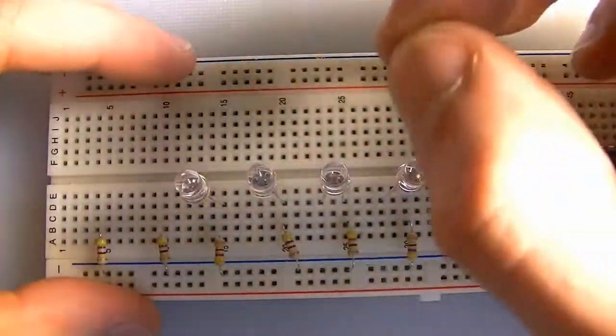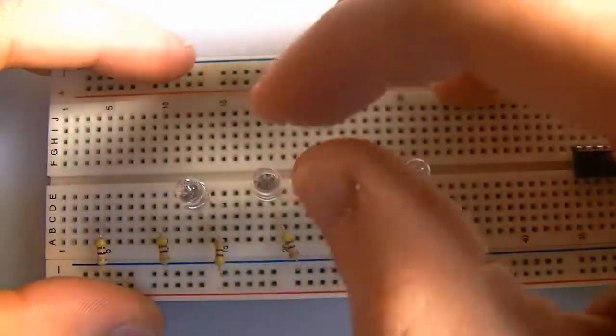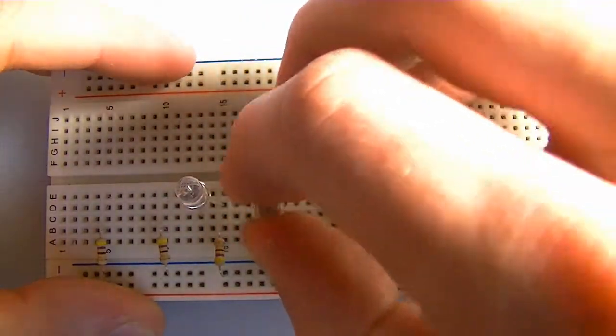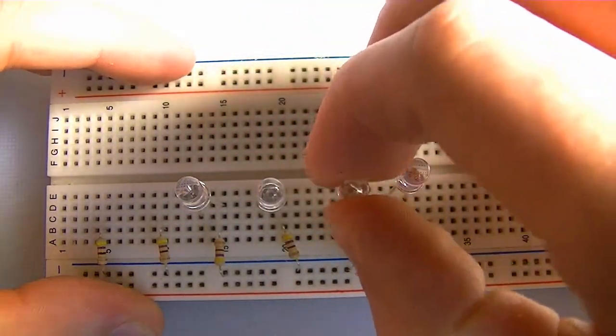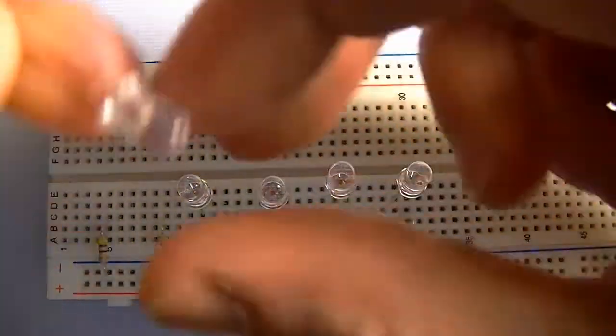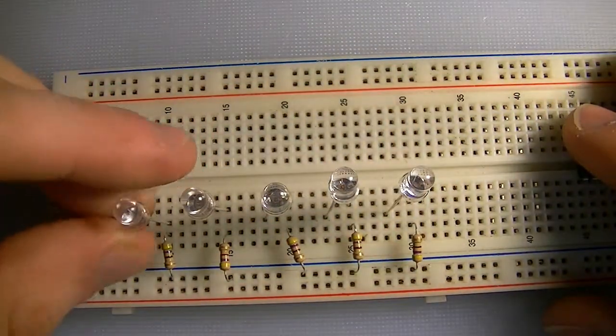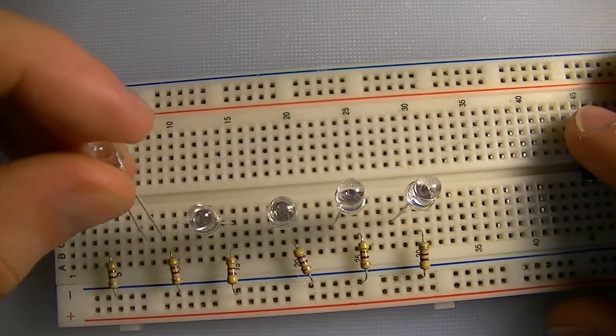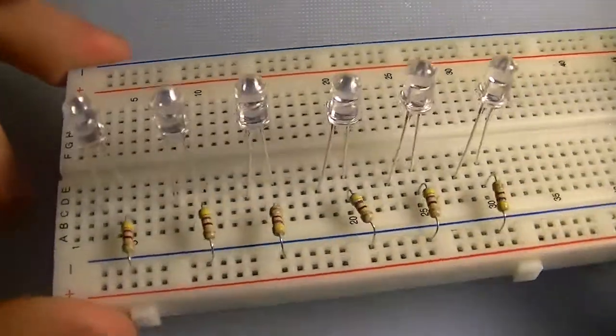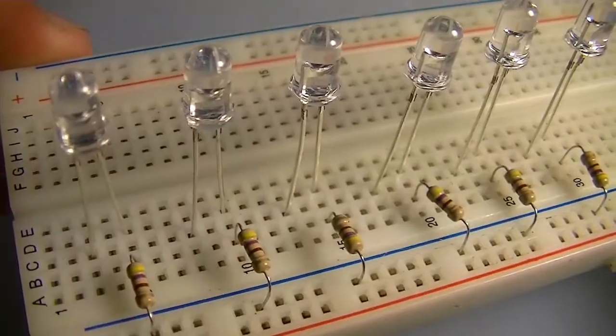And then we just repeat that. Actually, it would work a bit better if we kind of put them a bit diagonally, gives them a bit more resistance to coming out of the board, and that will make it easier to keep them straight. There, we've got our six LEDs, and you can see they're connected like that.